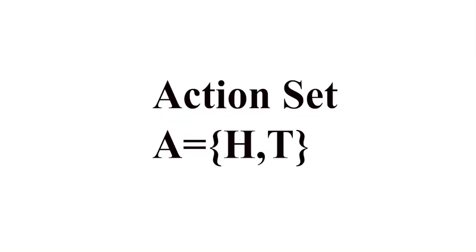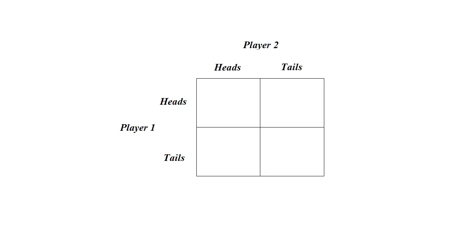In this game, each player has two choices, so the action set has two elements. Either they can play heads or tails. The interaction of two players' choices results in four outcomes. We can represent these four outcomes on a matrix. So suppose here we have player 2 and here we have player 1 actions. Player 1 can play heads or tails and player 2 can play heads or tails. So we have four choices: heads-heads, tails-tails, tails-heads and tails-tails.